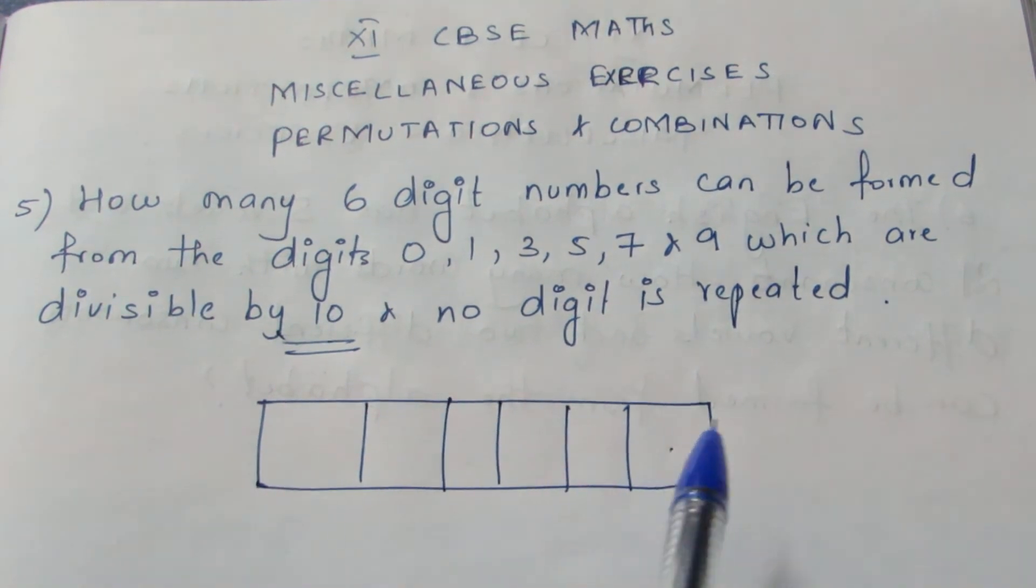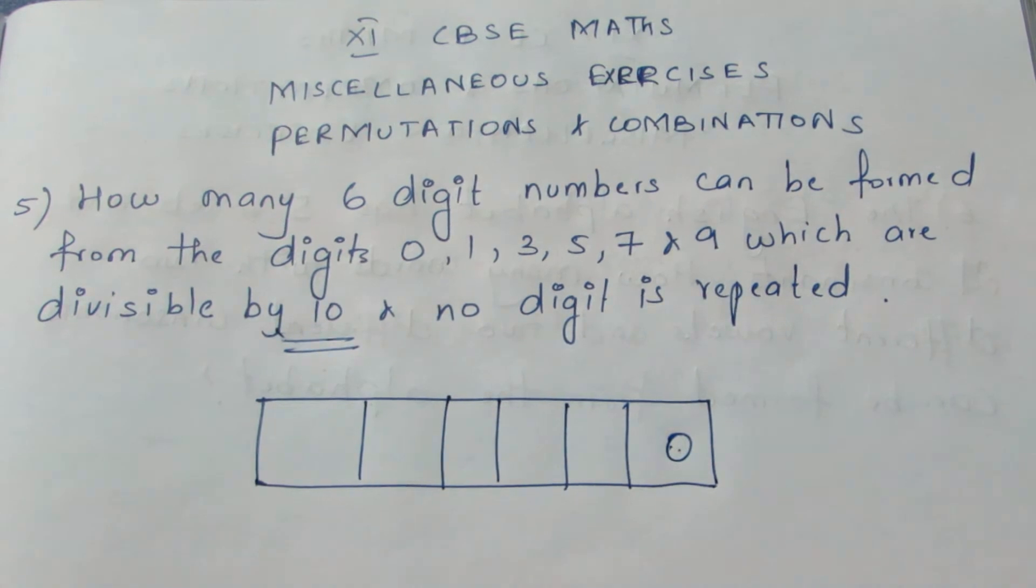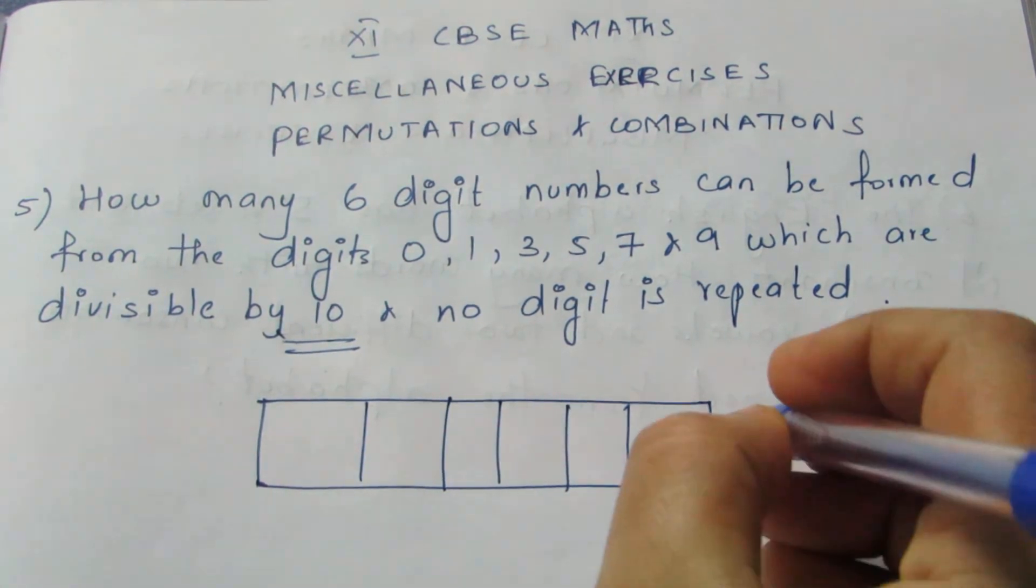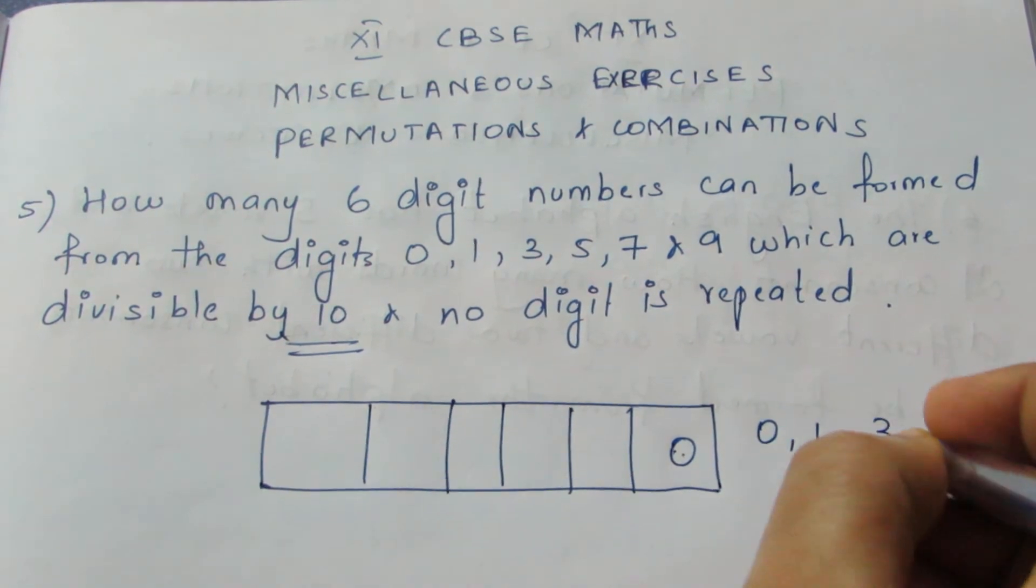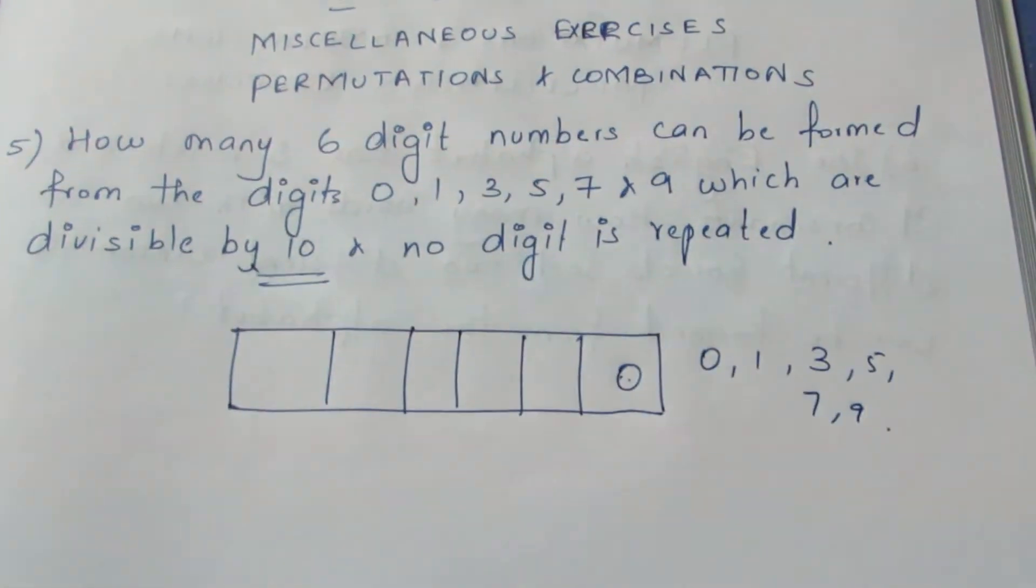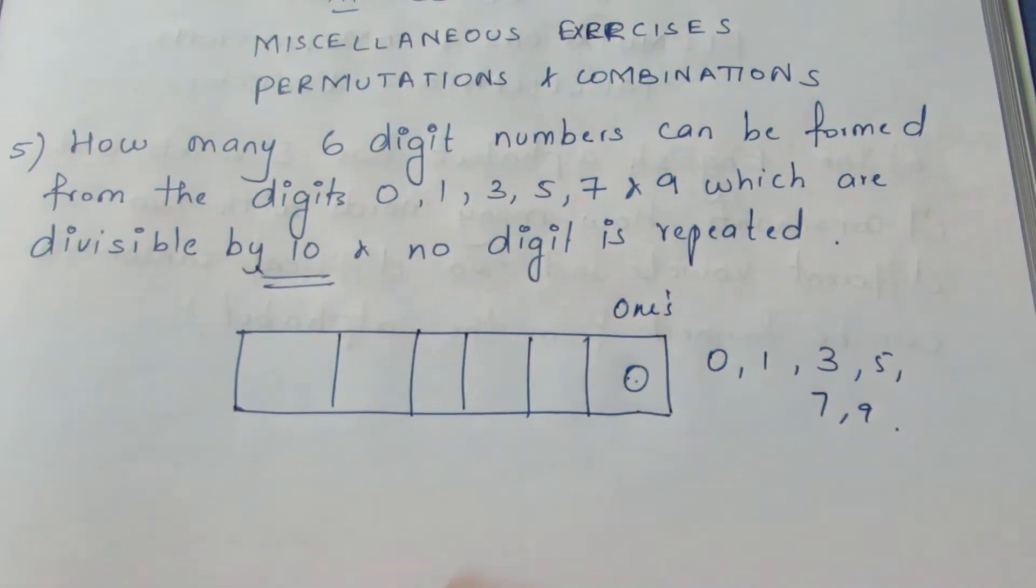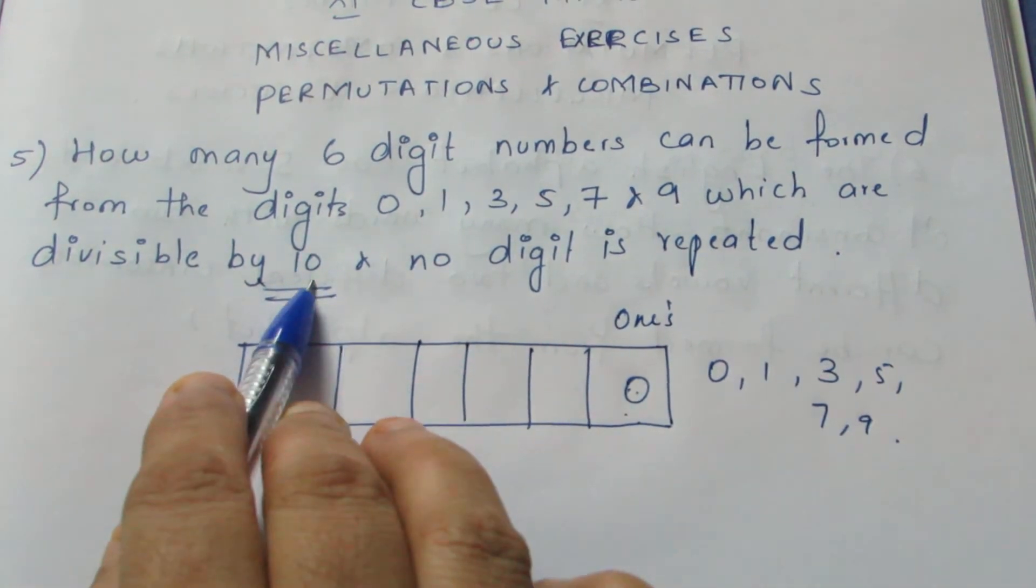When the last digit, that is in the ones place, if we have 0 then it will surely be divisible by 10. So in the given number, 0 should come in the ones place. If 0 comes in the ones place, that means it is divisible by 10.